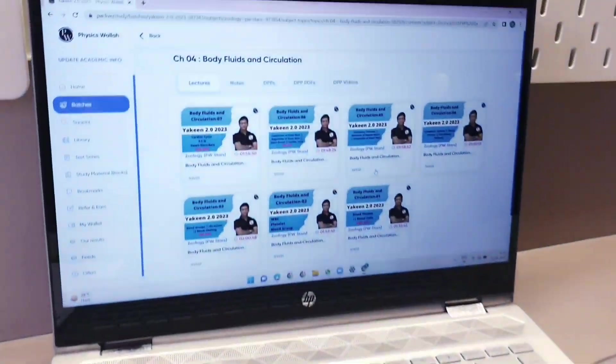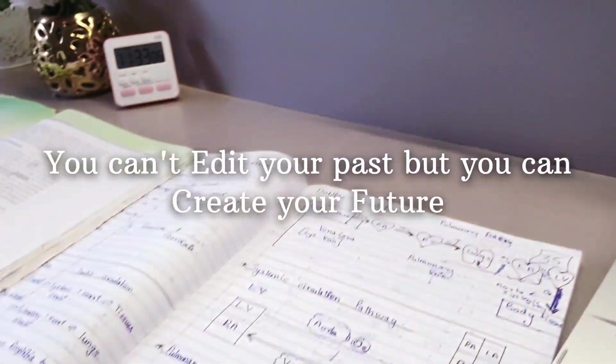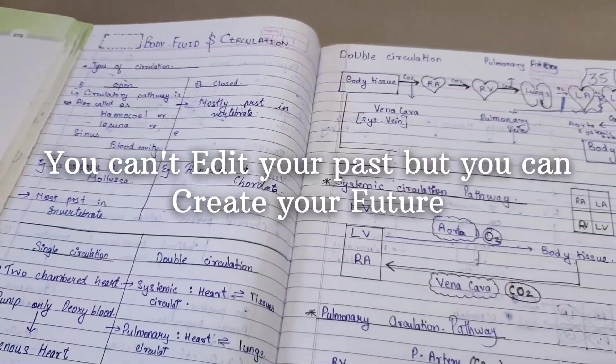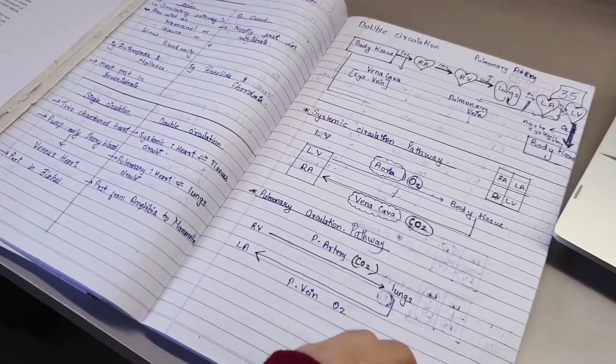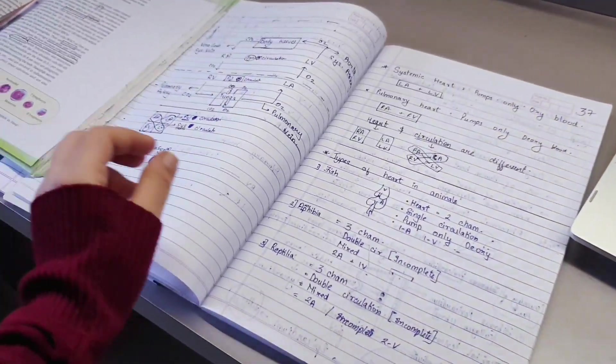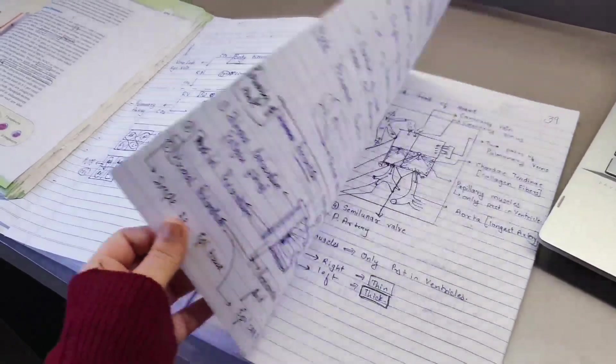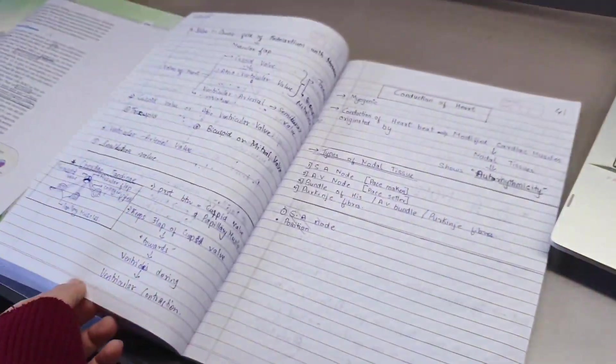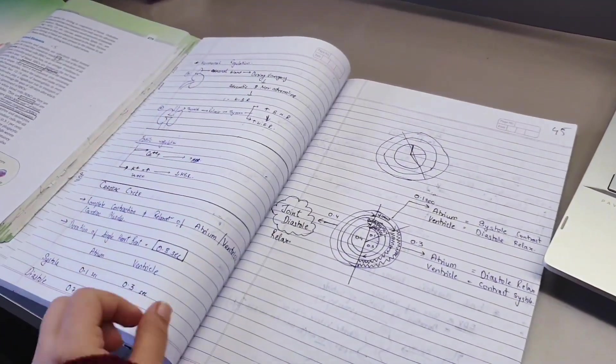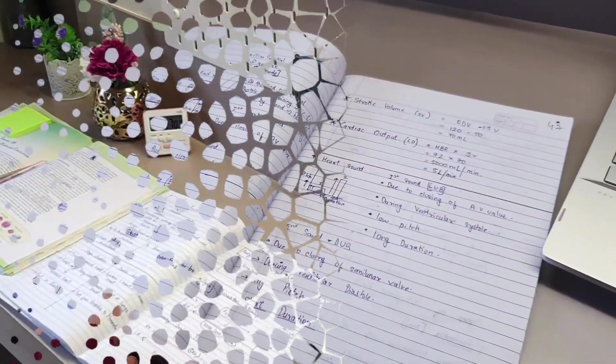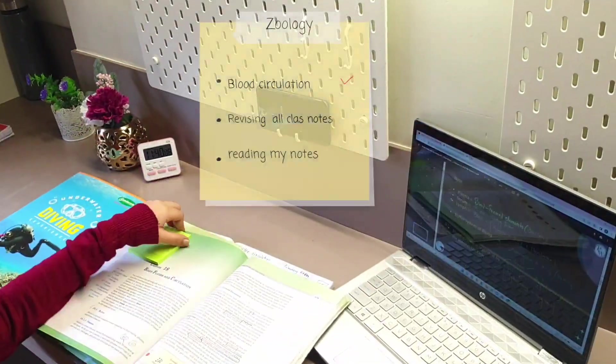What has happened has happened - you can't edit your past, but you can definitely create your future. The first thing you need to do is note down all the backlog that you have. It can be in the form of lectures, tests, or any kind of question practice. Then you should note down the syllabus of the upcoming test.